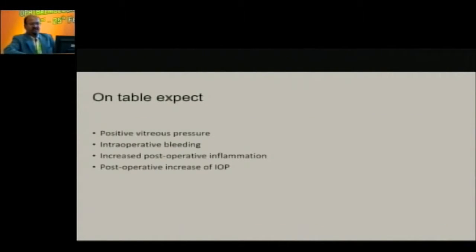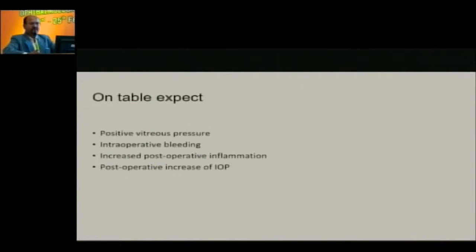On the table, always anticipate positive vitreous pressure. If you are doing under general anesthesia, you can ask the anesthetist or the assisting nurse to give hyperventilation, so that the vitreous deturgesces and the eye becomes a little softer, especially when you are entering the eye and doing iridectomy. Since the anterior chamber is quite shallow, you may even inadvertently cut the zonules or vitreous. Intraoperative bleeding may obscure the view, and postoperatively you may have severe inflammation and a rise in intraocular pressure.